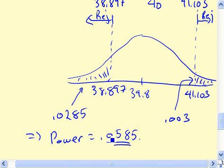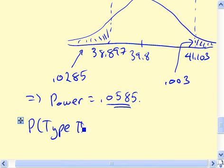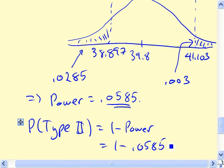Again, that's the probability that if the real population mean is 39.8, that our hypothesis test will actually pick this up and produce something that causes us to reject the null hypothesis. So that's fairly low. A type 2 error is made when we don't do that. In other words, when the null hypothesis is false, but we don't recognize it from our data. So the probability of a type 2 error is just 1 minus the power. So 1 minus 0.0585, and that is 0.9415.